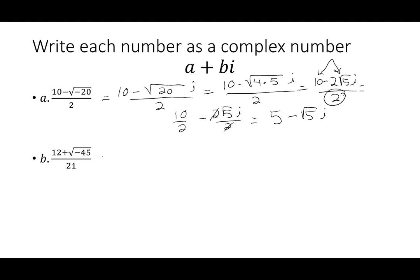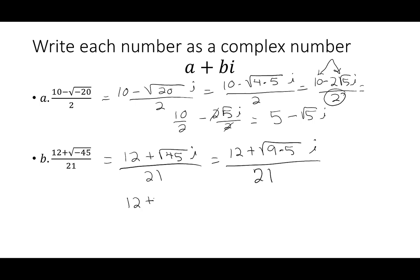Similarly, for 12 plus the square root of negative 45, all over 21: pull out the i, so we have 12 plus square root of 45i over 21. Since 45 is 9 times 5, the square root of 9 is 3, giving 12 plus 3 square root of 5i over 21. Splitting over 21: 12 and 21 are both divisible by 3, giving 4 over 7. Likewise, 3 and 21 are divisible by 3, giving square root of 5 over 7 times i. Final answer: 4/7 plus square root of 5 over 7 times i.